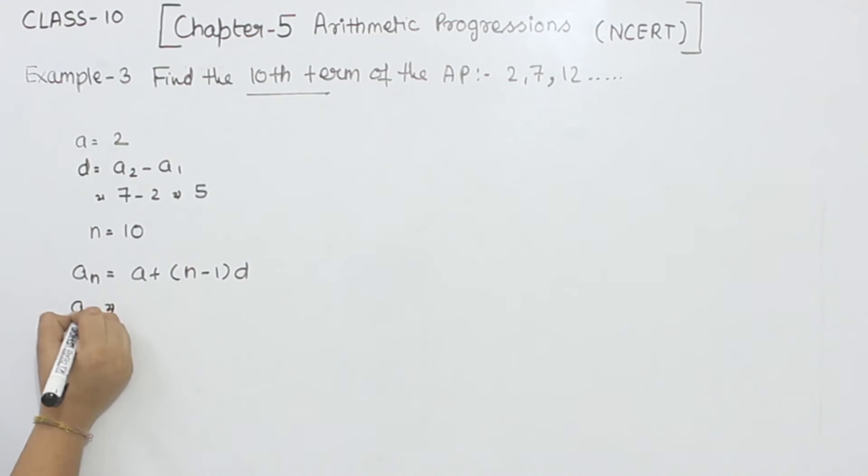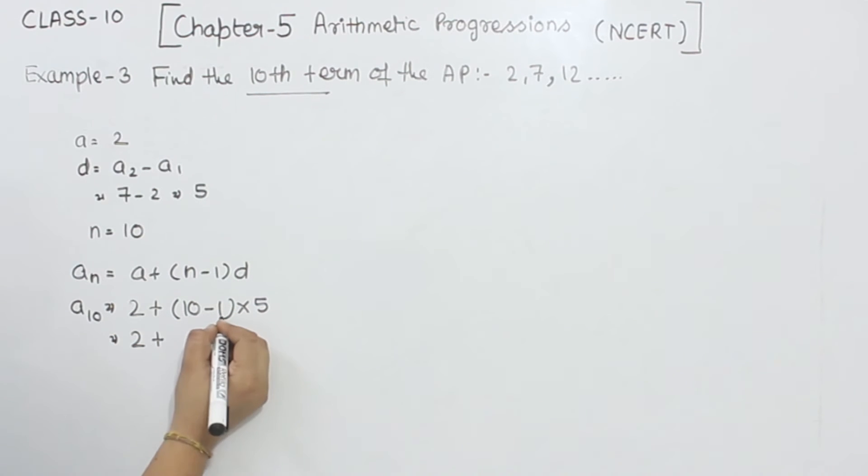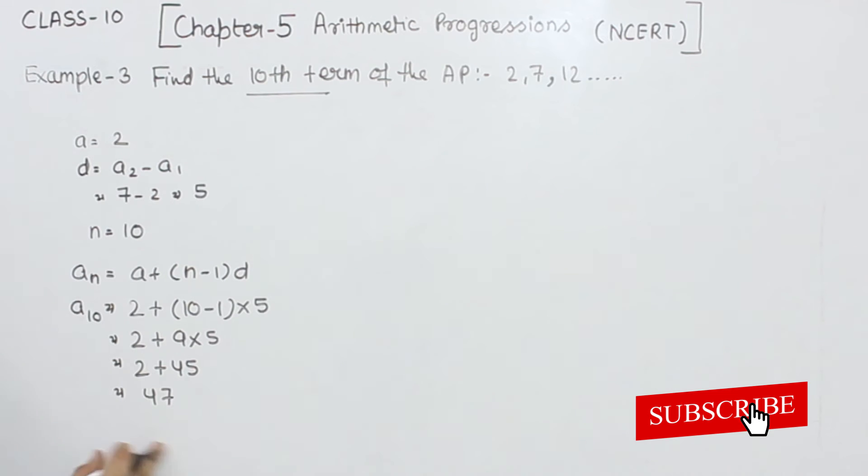So we have to find A10. A is 2 plus N is 10 minus 1, and the common difference D is 5. This is 2 plus 10 minus 1 is 9 multiplied by 5. So this is 2 plus 9 times 5 is 45. 2 plus 45 equals 47.